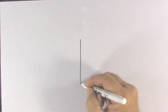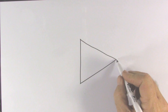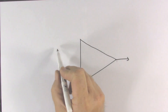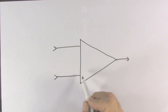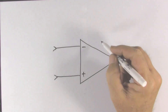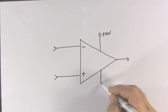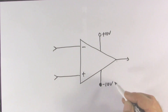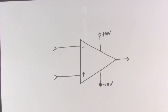We're going to start with our op-amp symbol. Output to inputs. There's our standard op-amp circuit diagram. The way the op-amp works is the op-amp will change its output voltage to whatever it takes to make the two input voltages equal.